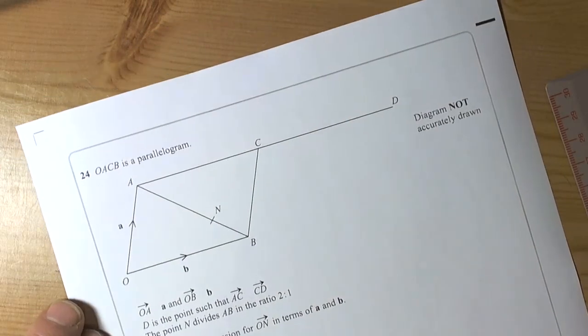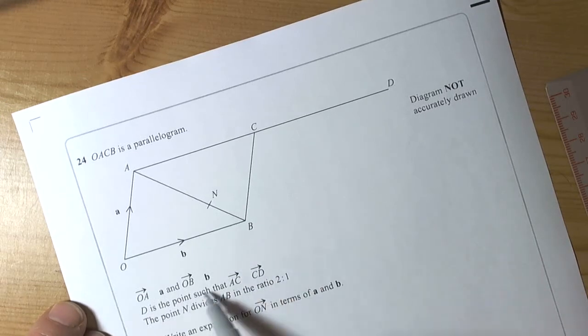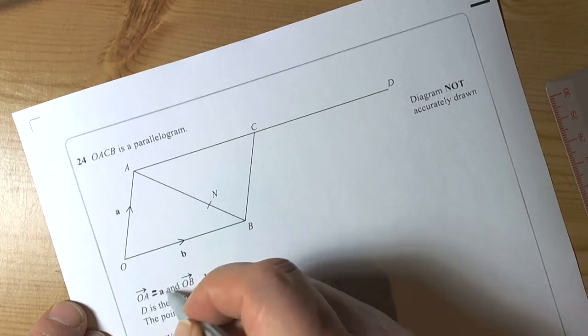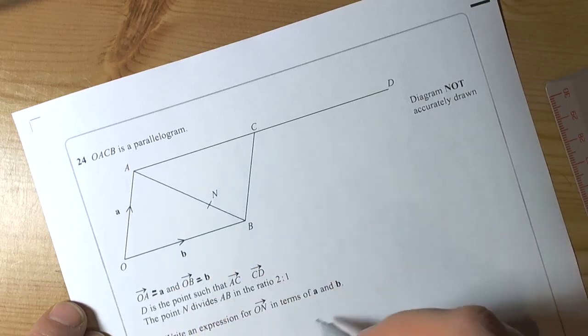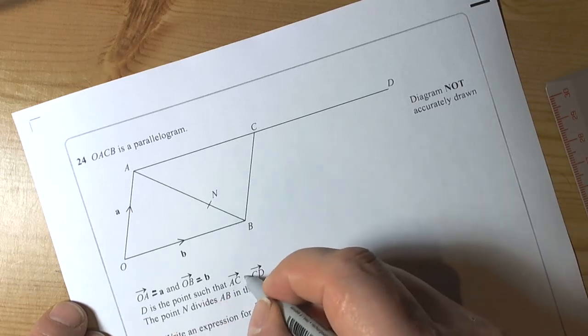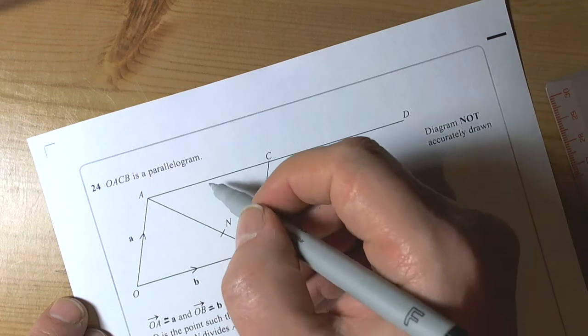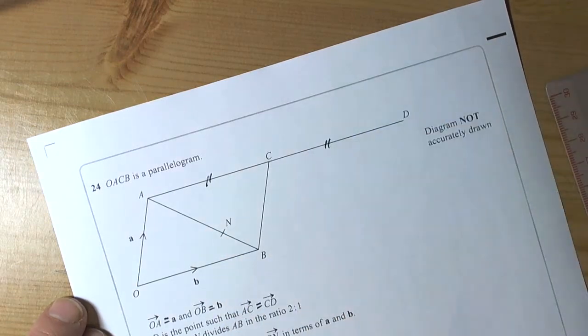So a vectors question here and we've got to be careful that we read the information. They're telling us that the vector OA is equal to a and the vector OB is equal to b. And D is a point such that AC is equal to CD, so they're telling us that this line here is the same distance as this line here.